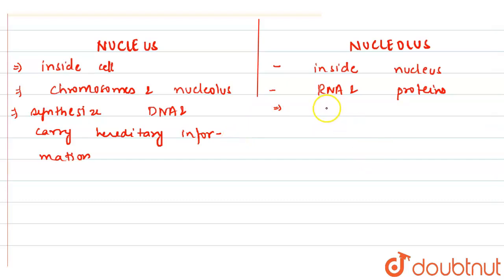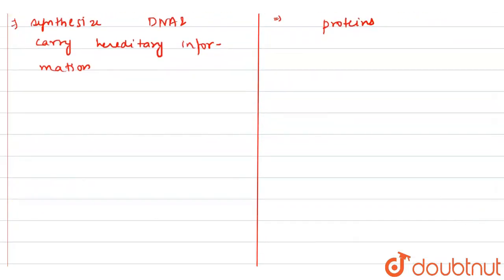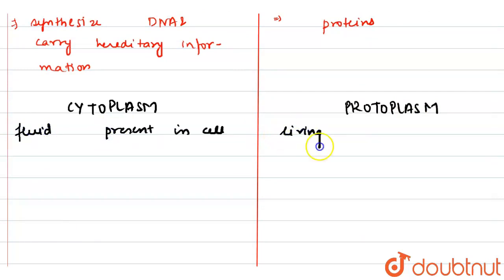Next, we have to differentiate between cytoplasm and protoplasm. Cytoplasm is the fluid present in cell, whereas protoplasm is the living matter present in cell. Cytoplasm consists of organelles—that is, endoplasmic reticulum, Golgi bodies, mitochondria, chloroplast in case of plant cells. Vacuoles are also present in cytoplasm, whereas protoplasm consists of nucleus and cytoplasm.